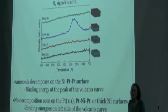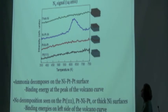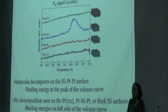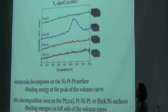Nickel on top of platinum is the surface that we predicted to be active in our computational calculations. This verifies our ability to start predicting complex bimetallic catalysts using computational methods.